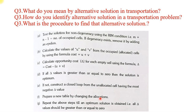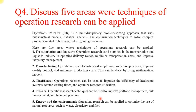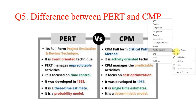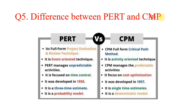Question number four: discuss five areas where techniques of Operation Research can be applied. Question number five: the difference between PERT and CPM — that is Critical Path Method.